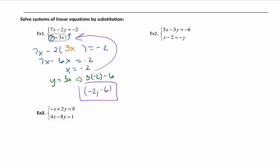Now, number 1 already had y equals. Number 2 does not. So it's actually your choice if you want to take this second equation and multiply it by negative 1. Or, in this case, I actually am going to take it and move the 2 over and use x equals negative y plus 2. So now I'm going to take this and plug it back into the original equation for x.